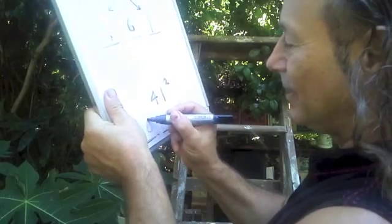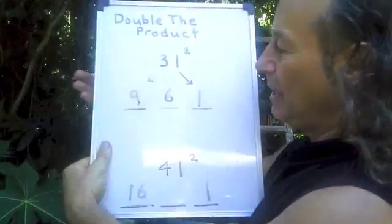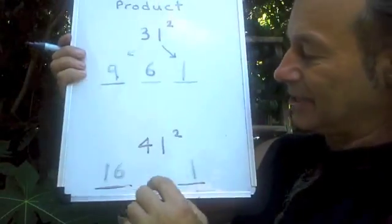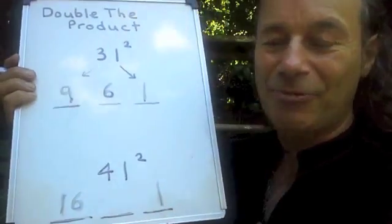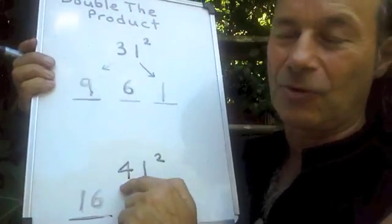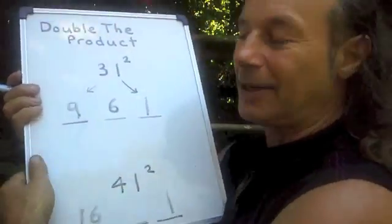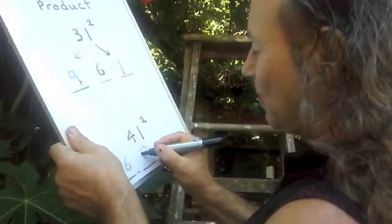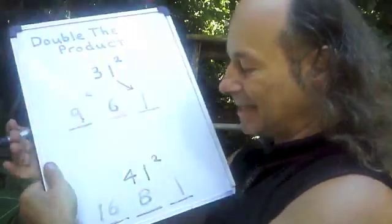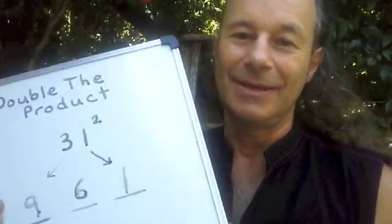So we double the product. Say 1 times 4 is 4—because product means to multiply—1 times 4 is 4, double that which is 8. So the answer is 1681, and we did that actually in seconds. So that's pretty good, so I deserve my reward now.